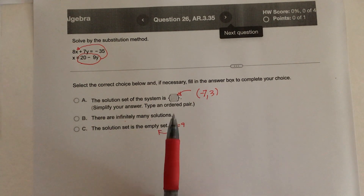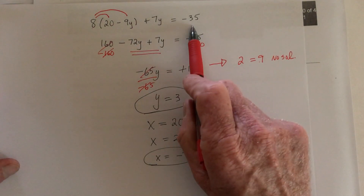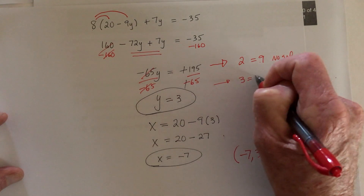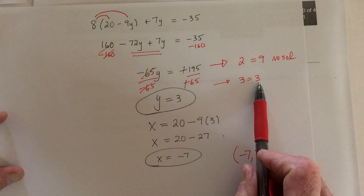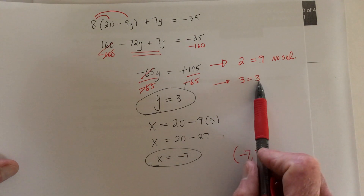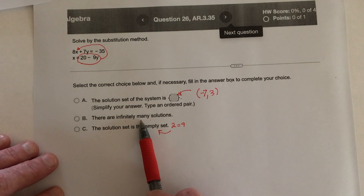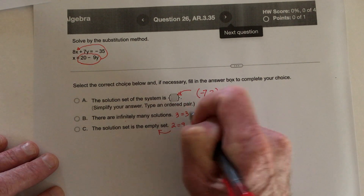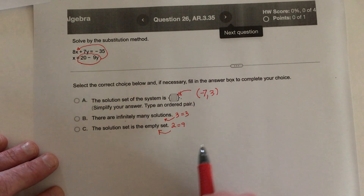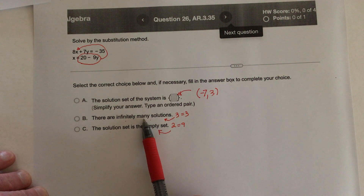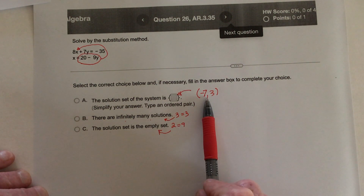For infinitely many solutions, what would happen is you're doing this work, going along, and then all of a sudden it says 3 equals 3. Well, obviously 3 does equal 3 — that's true. But this doesn't tell me what x equals, and it doesn't tell me what y equals. So if you get something like this, that's infinitely many solutions — because how often does 3 equal 3? An infinite number of times. So if you get a false statement, that's empty set; if you get a true statement, that's infinitely many solutions. But what happens most of the time is you do go ahead and get solutions.